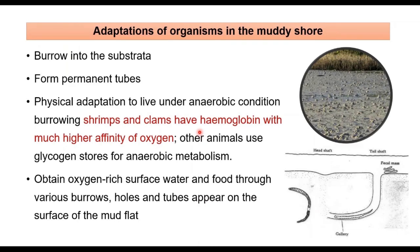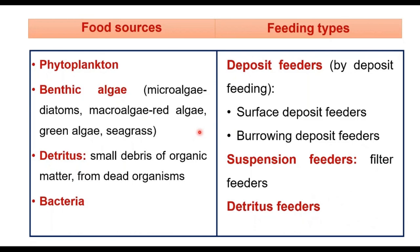The adaptations are similar to sandy shores, but certain organisms form permanent tubes. Most of the suspended particles from the water are taken inside, neutralized as food, and the organism waits for the next tide to bring food into the burrows. As a physical adaptation in anaerobic conditions, shrimps and worms have hemoglobin with high affinity towards oxygen. Other animals use glycogen stores whenever they retreat into the burrows for survival. Food sources in these areas are mainly phytoplankton or benthic algae, and most organisms rely on detritus and bacteria, which are the decomposers.